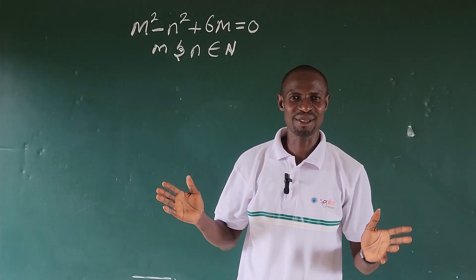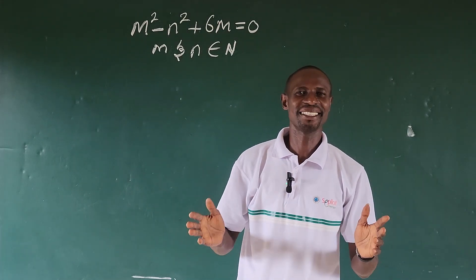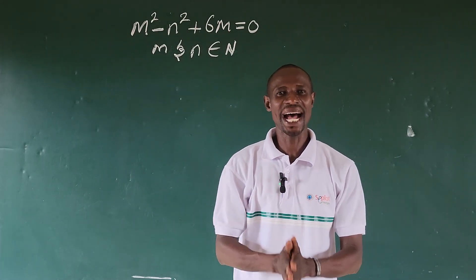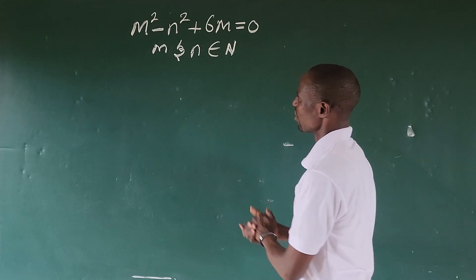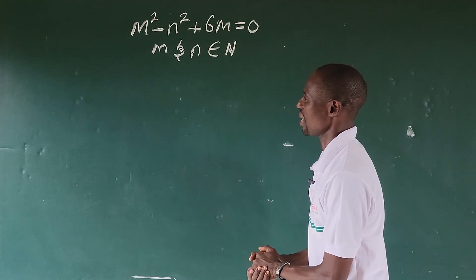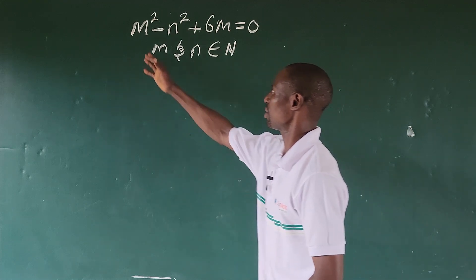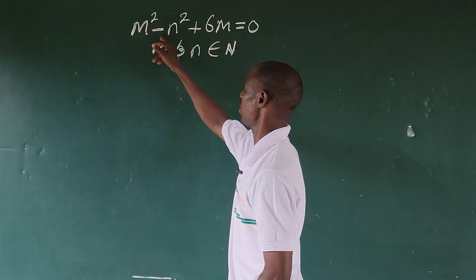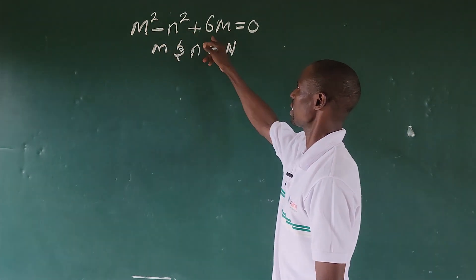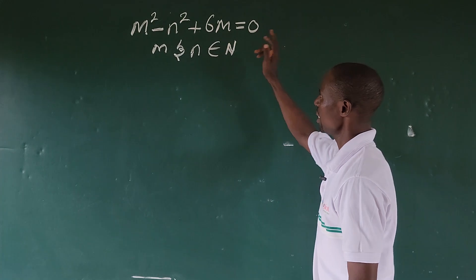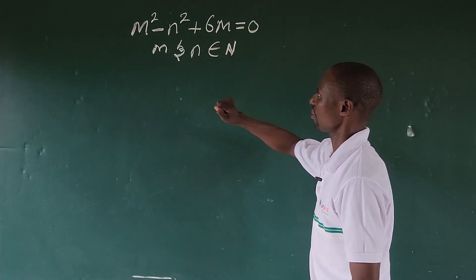Hi, my good people, welcome to today's math class. Look at the question before us: we have m to the power of 2 minus n to the power of 2 plus 6m equal to 0.